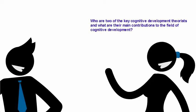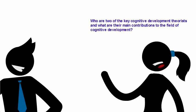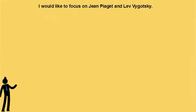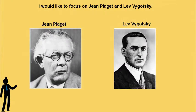Who are two of the key cognitive development theorists and what are their main contributions to the field of cognitive development? I'd like to focus on Jean Piaget and Lev Vygotsky.